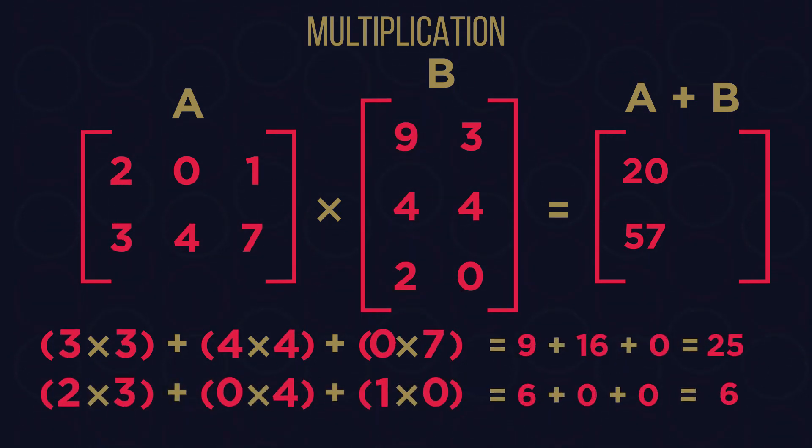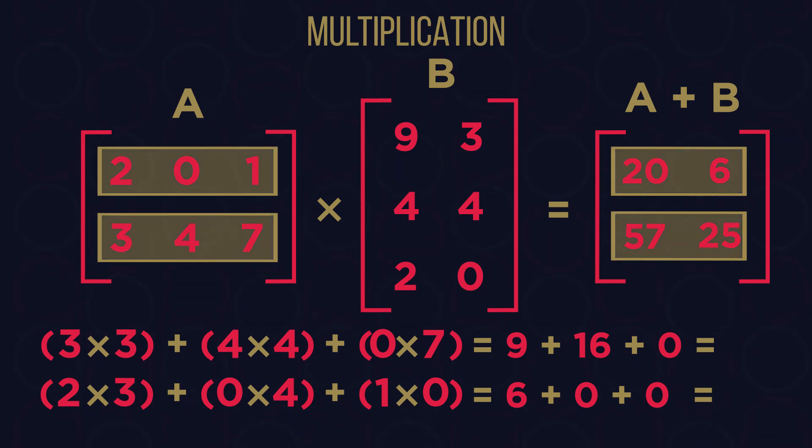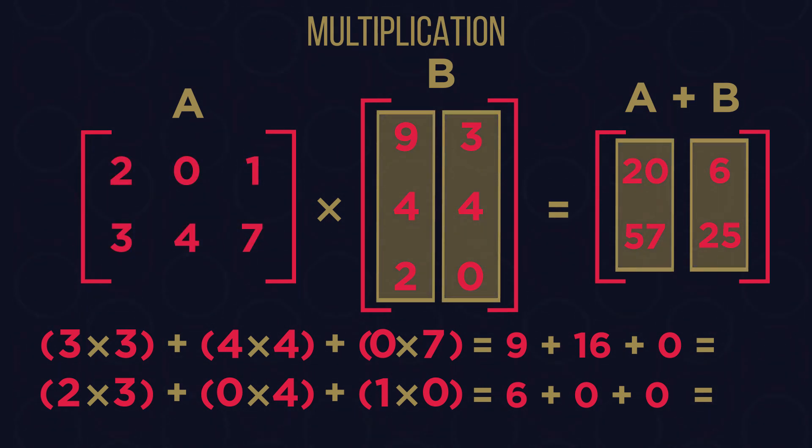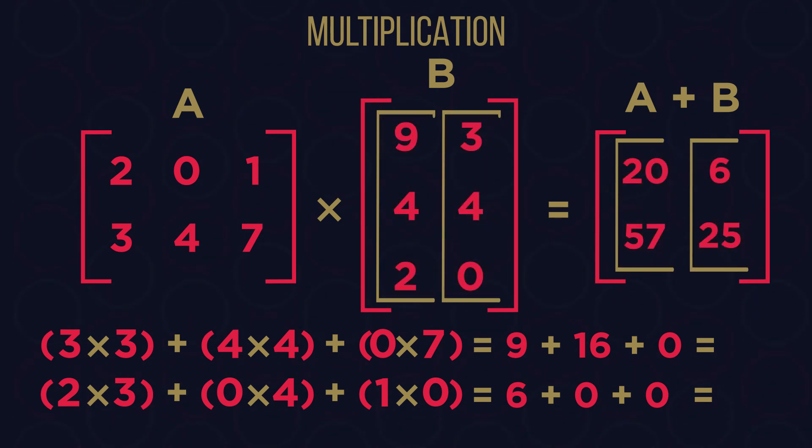We do that with all the possible combinations of rows of A and columns of B, placing each result in the correct spots on the results matrix. We can then notice that the result matrix will have the same number of rows as A and the same number of columns as B. So this is how you add and multiply matrices.